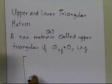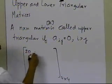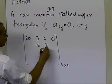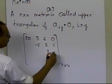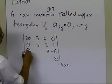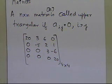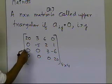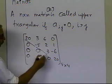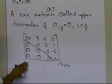Let's take an example. Suppose we have a 4-by-4 matrix written as: 20, 3, 6, 0; minus 5, 2, 1, 3; minus 6, 20; and then the remaining entries are 0, 0, 0, 0, 0, 0, 0, 0. What you are basically seeing here is that any of the elements where the row number is bigger than the column number — those elements below the diagonal — are all 0.